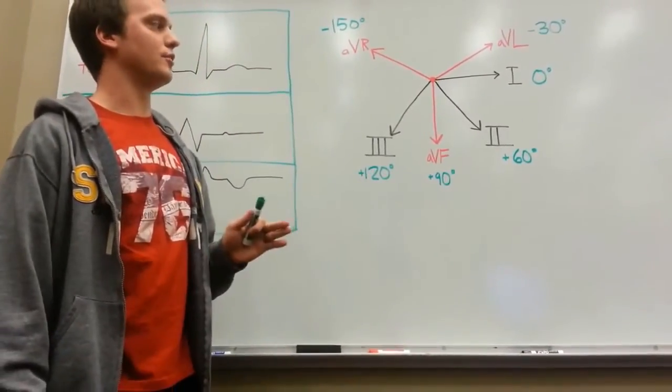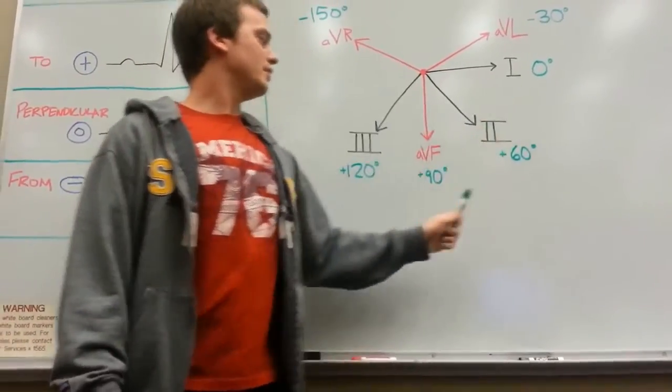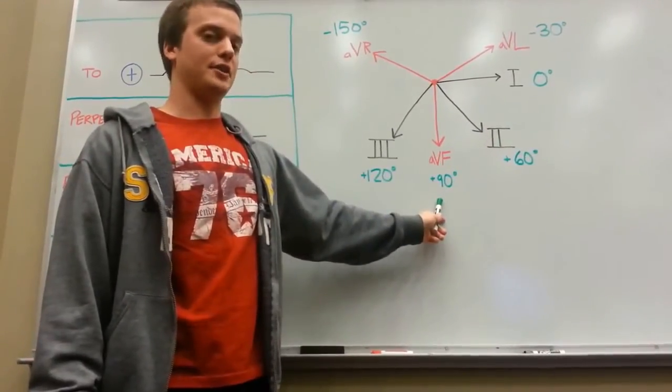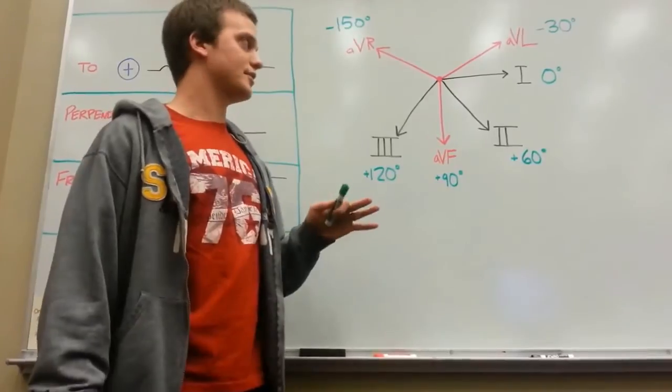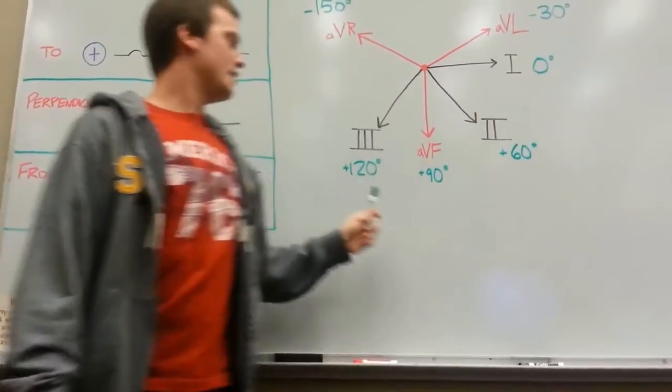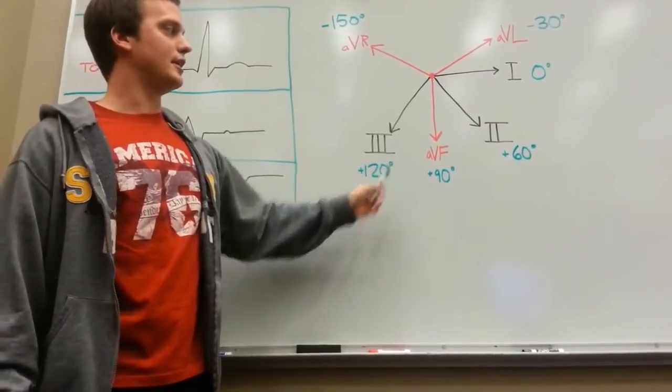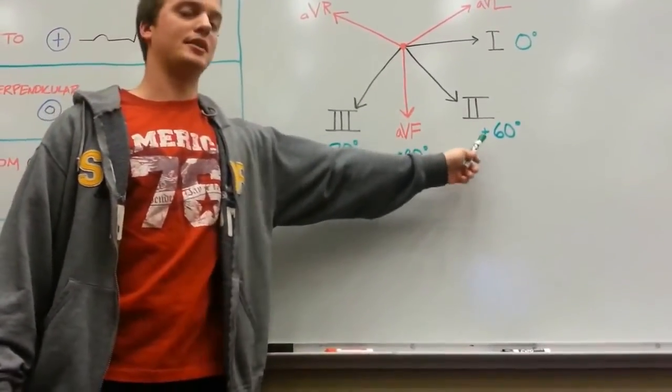Typically, a healthy heart will have a mean electrical axis in between 0 and positive 90 degrees. Some sources will say that you can go all the way up to negative 30 to positive 120. I'd say the average is about positive 60 to positive 75.